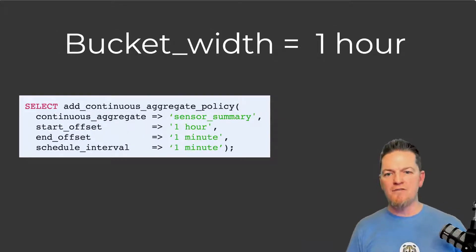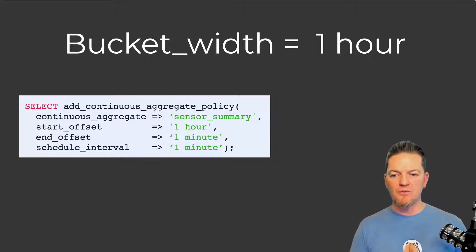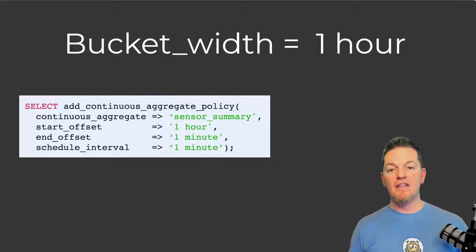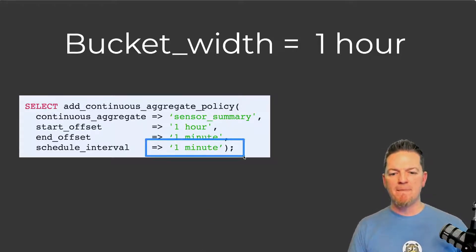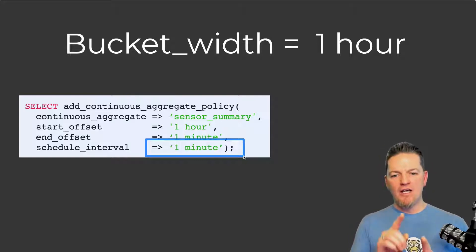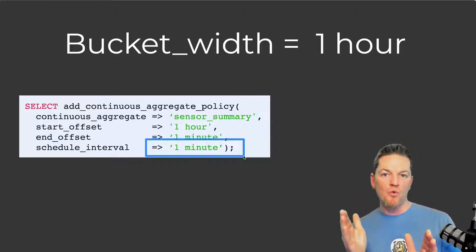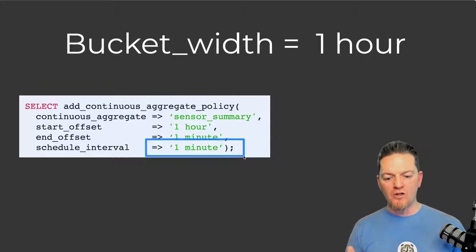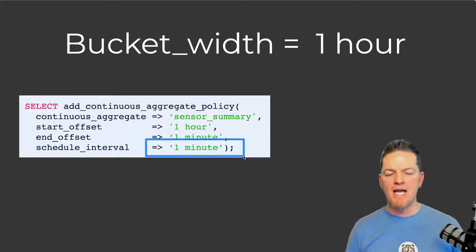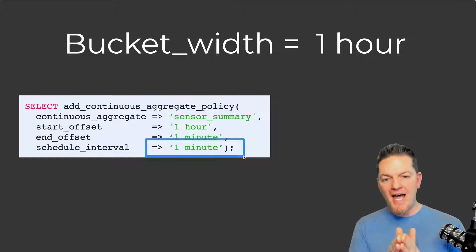Likewise, another common setup: start offset of one hour, refresh interval of one minute, end offset of one minute. Surely you have an entire hour of data and it runs every minute — so it will refresh that bucket on the hour. The problem is when you create this refresh policy, you probably don't hit enter exactly on the hour. So even if the policy runs one second after the hour, the one-hour offset is an interval going back to one second after the beginning of the previous hour, crossing two buckets. That's not one full bucket, so this also will not work.